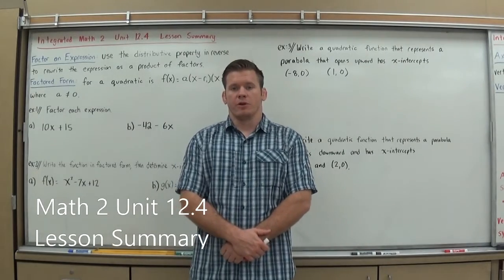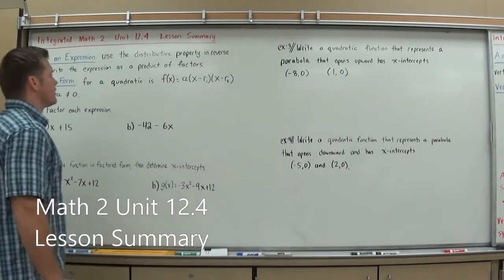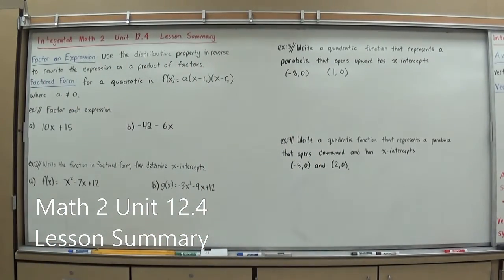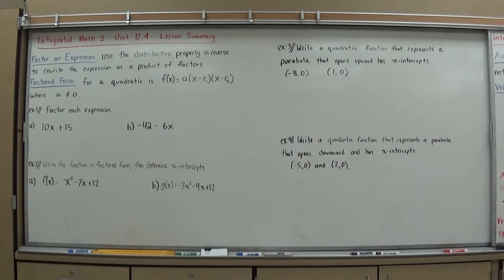Hi, I'm Mr. Richmond and this is your Integrated Math 2, Unit 12.4 Lesson Summary. In Unit 12.4, we're going to continue kind of where we left off in 12.3. We started to look at what roots and x-intercepts are and how we can find them on a graph. But now we're going to find a more efficient way.